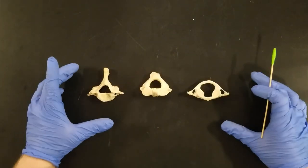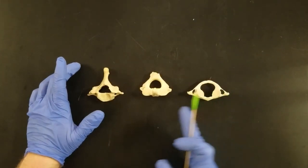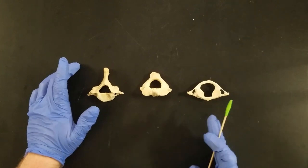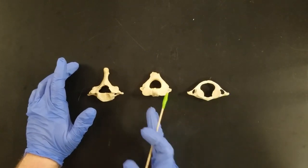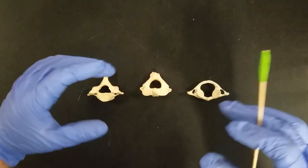In this video, we're going to look at three cervical vertebrae. These three cervical vertebrae, C1, C2, and C7, have special shapes.